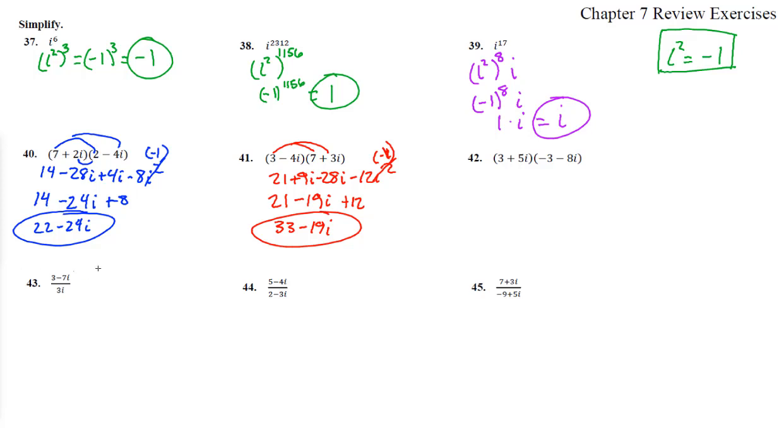Number 42. Distribute, and we get minus 9 minus 24i minus 15i minus 40i squared. Remember, i squared is a negative 1.